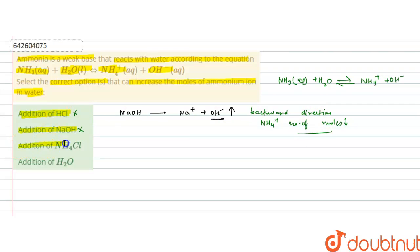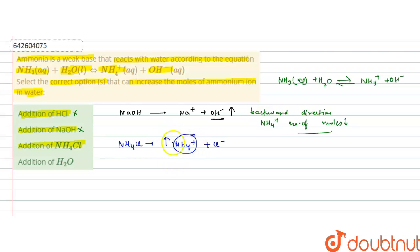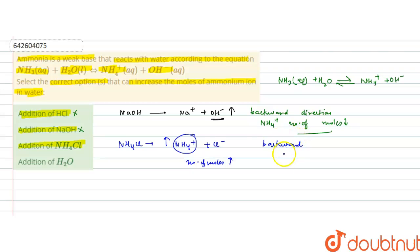The third option is the addition of ammonium chloride. Ammonium chloride dissociates to give ammonium ions and chloride ions, increasing ammonium ion concentration. However, by Le Chatelier's principle, the equilibrium will shift backward to oppose this increase. So the number of moles of ammonium ion will not fully increase — this is also an incorrect option.